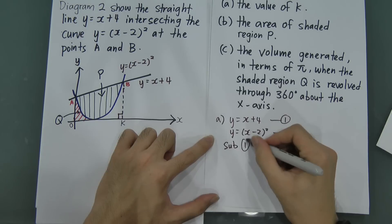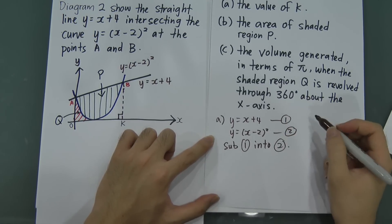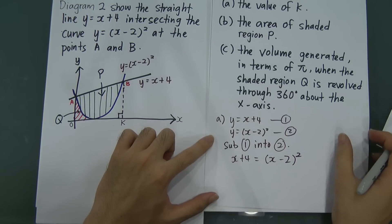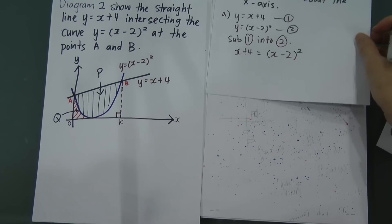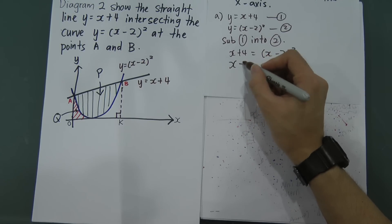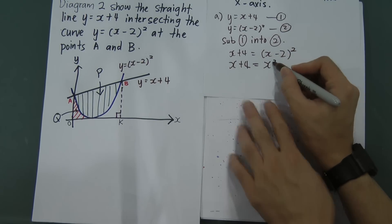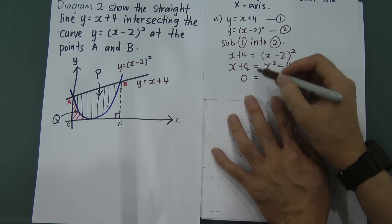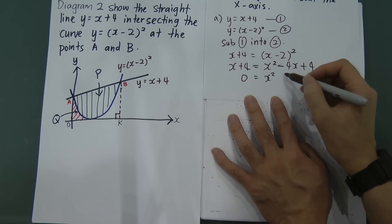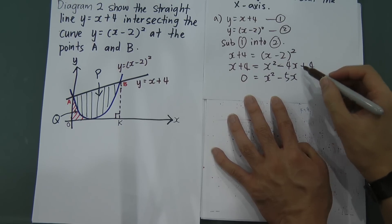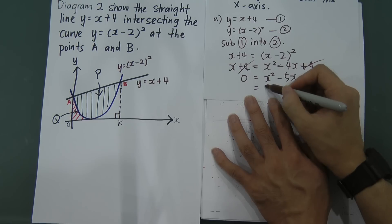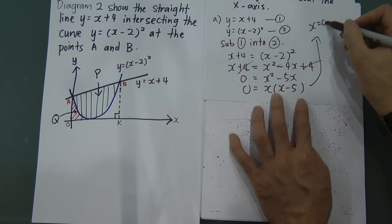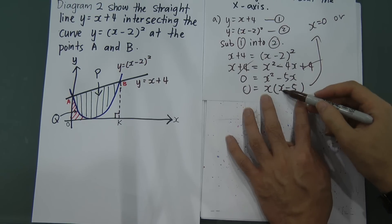I substitute the first one into the second one. Therefore, I will get x plus 4 equal to x minus 2 squared. Then I expand: x plus 4 equal to x squared minus 4x plus 4. I simplify and move everything to one side to make it equal to 0. So x squared minus 4x minus x gives minus 5x, and the 4 and 4 cancel out. After that, I factorize and get x times x minus 5. Therefore, x will equal to 0 or x will equal to 5.